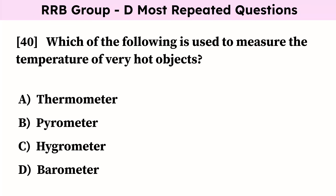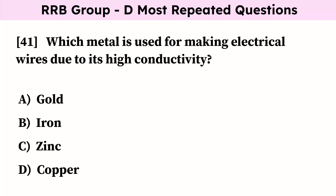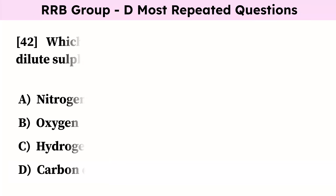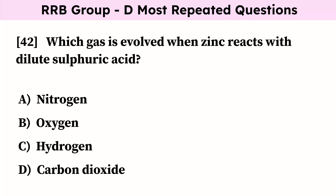Which of the following is used to measure the temperature of very hot objects? Correct answer is pyrometer. Which metal is used for making electrical wires due to its high conductivity? Correct answer is copper. Which gas is evolved when zinc reacts with dilute sulfuric acid? Correct answer is hydrogen.